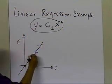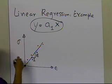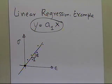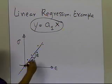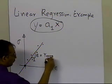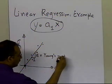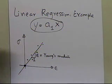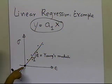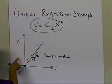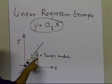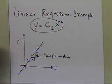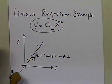The slope of the line of the stress versus strain will give us the Young's modulus. This E, which you're seeing here, is the Young's modulus — it's one of the elastic moduli of the material. Let's go ahead and see how we're going to find the relationship between stress and strain, and find the Young's modulus of a composite material, when we know that the regression model has to go through the origin.